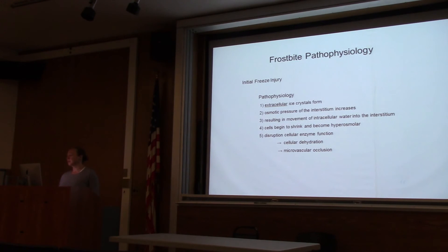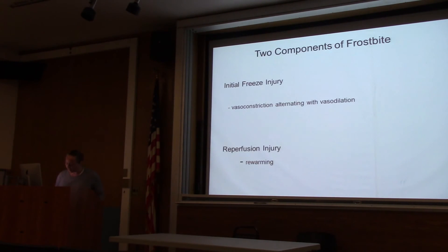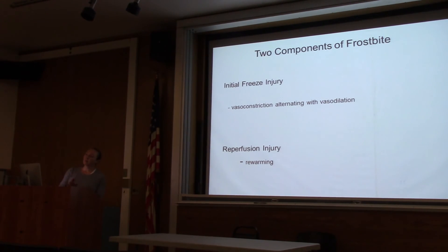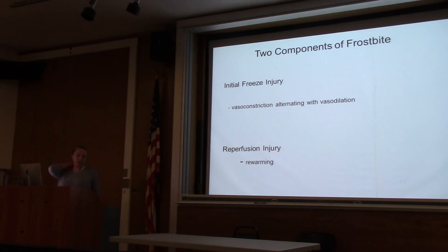The pathophysiology of frostbite is that extracellular ice crystals form, causing disruption of the cellular membrane and cellular dehydration. The initial freeze causes vasoconstriction alternating with vasodilation, followed by rewarming. An important mistake to avoid: if you're not in an area where you can provide constant warmth, do not rewarm the patient only to have the extremity refreeze. Repeated freeze-thaw cycles cause more damage than the initial freeze, so if you're more than two hours from definitive care, don't start rewarming.